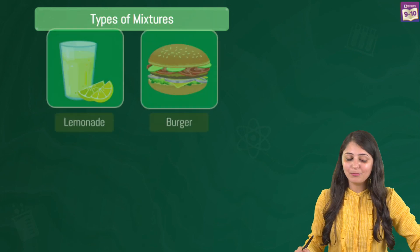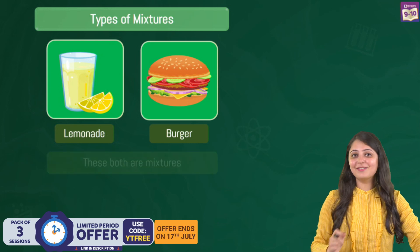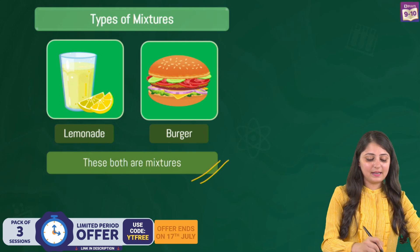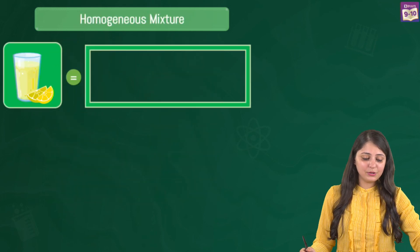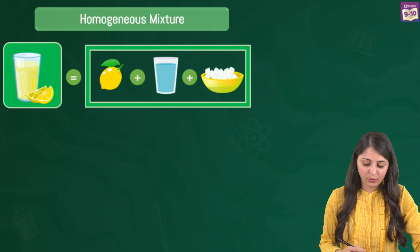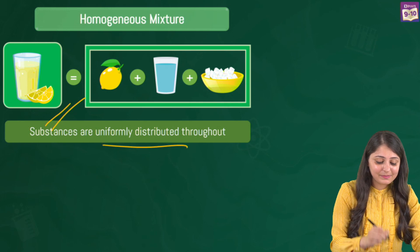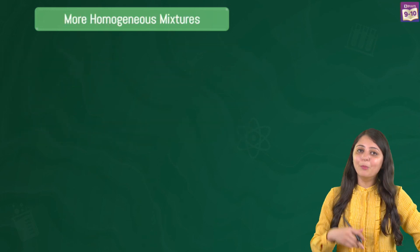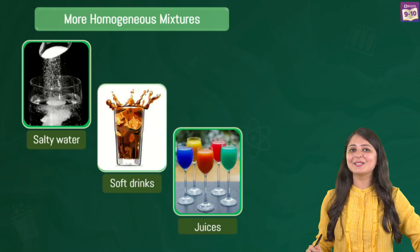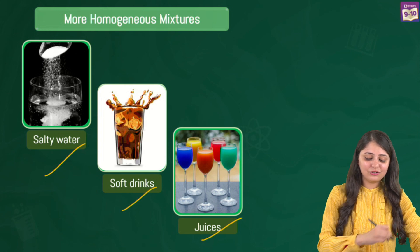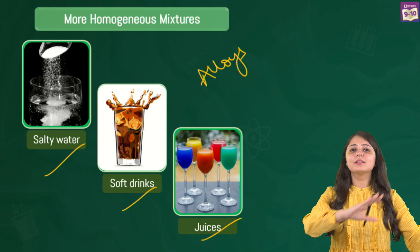Let's talk about mixtures a bit more. Lemonade and burger are both mixtures, yet they are different. With lemonade, you'll notice it has lemon juice and sugar mixed in water — there is no visible boundary of separation between the particles, and the substances are uniformly distributed throughout. This is a homogeneous mixture. More examples include salty water, soft drinks, juices, alloys, and sugar in water — all have uniform composition throughout with no visible boundary of separation.